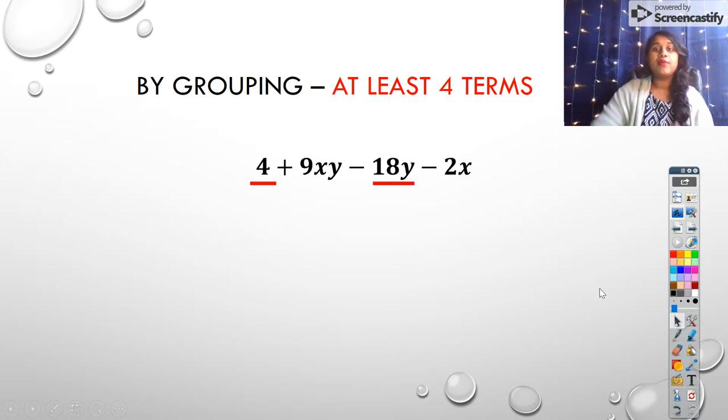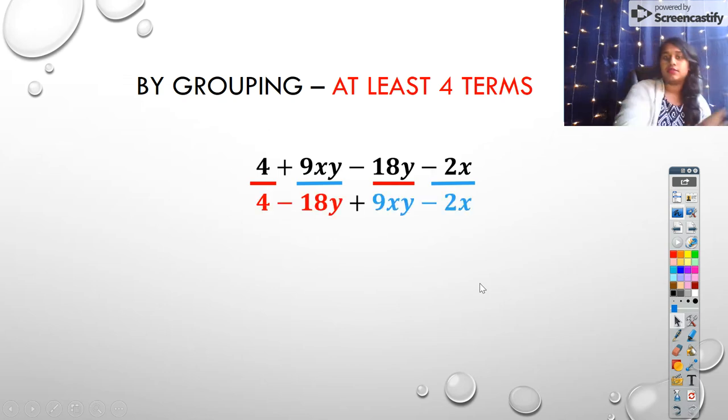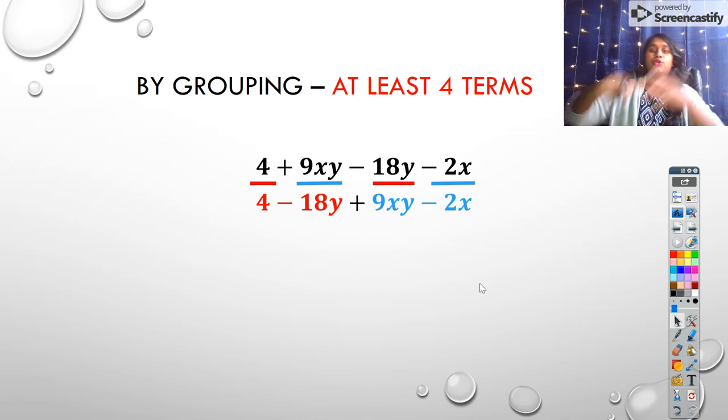So here I have a first example. I went ahead and grouped 4 and -18y, and I grouped 9xy and -2x. Technically, if you had grouped it a slightly different way, almost 9 times out of 10, as long as you recognize factors, no matter which way you group it, you're going to come back with the same answer. So I pull those out. What I had grouped in red, now it's grouped. What I had in blue, now it's grouped. I have two very distinct groups.